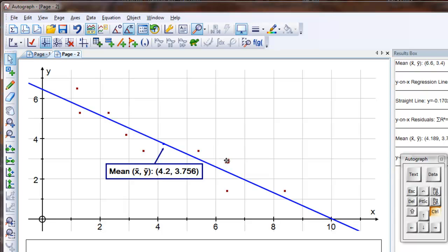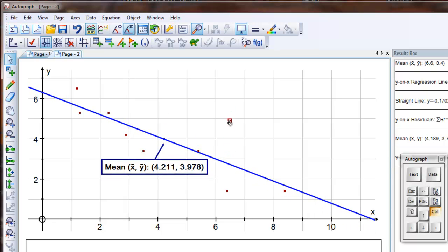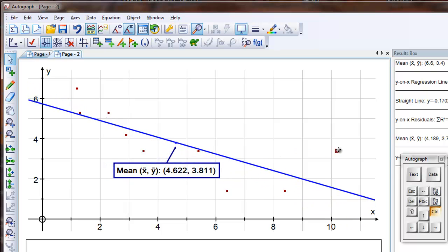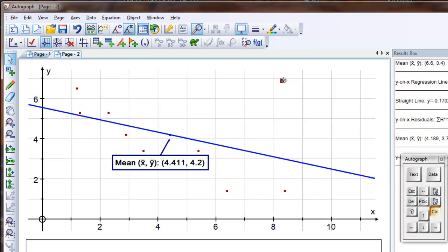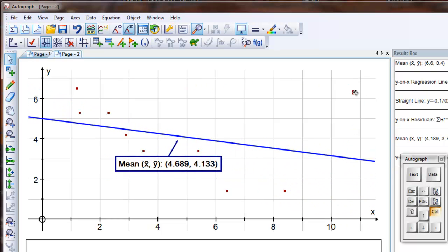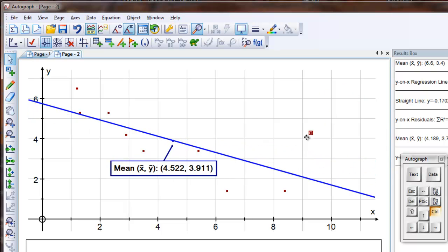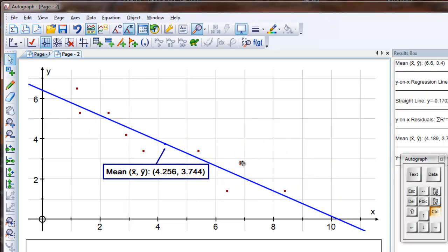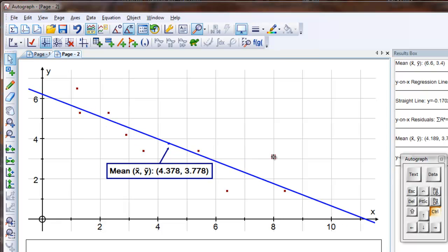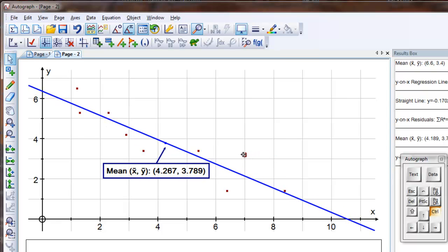For example, if I move this point here by keeping the X the same, what's going to happen to the mean? Well, the X bar value will not change, but Y bar will, so it's going to move up. Correct. You can show that the effect of moving a single point around. The important thing to realize here is that the least squares regression line always passes through the mean of the data.